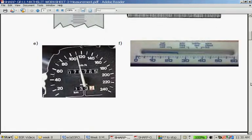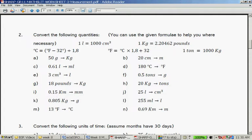Question number two. Convert the following quantities. You can use the given formula to help you when necessary. One liter is 1,000 cubic centimeters. A kilogram is 2.20462 pounds. 50 grams to kilograms. There's 1,000 gram in a kilogram. So, you go 50 divided by 1,000. 20 centimeters to meters. There's 100 centimeters in a meter. So, 20 divided by 100. 0.61 liters. There's 1,000 milliliters in a liter. So, it's 0.61 times 1,000.